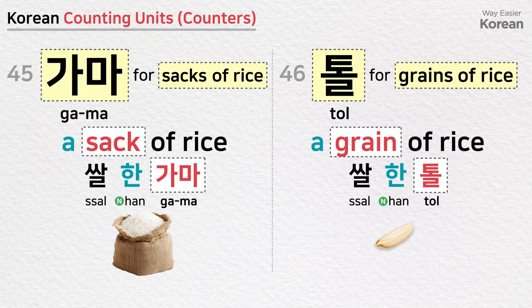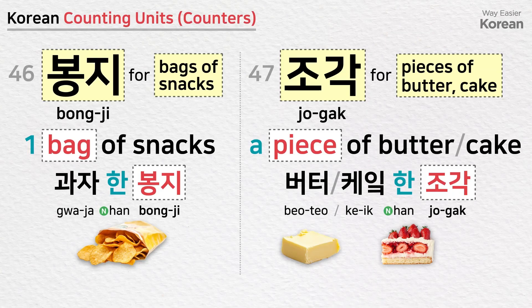가마 is a counting unit for sacks of rice: a sack of rice — 쌀 한 가마. 톨 is a counting unit for grains of rice: a grain of rice — 쌀 한 톨. 봉지 is a counting unit for bags of snacks: a bag of snacks — 과자 한 봉지. 조각 is a counting unit for pieces of butter or cake: a piece of butter — 버터 한 조각; a piece of cake — 케이크 한 조각.